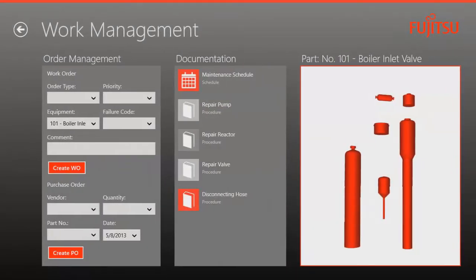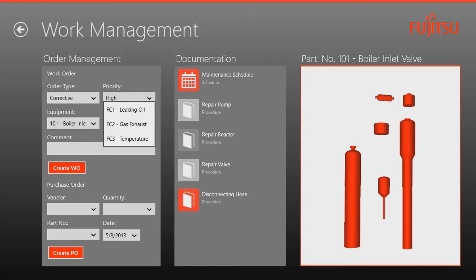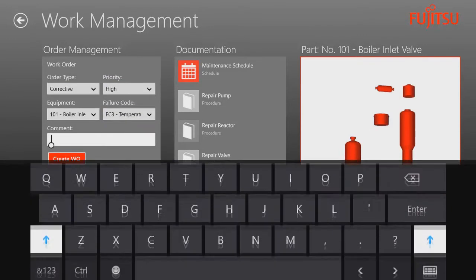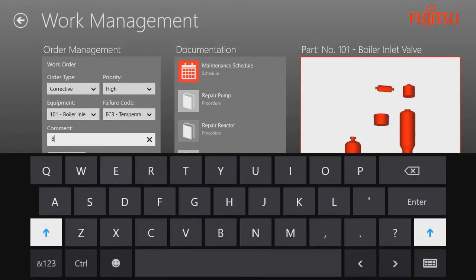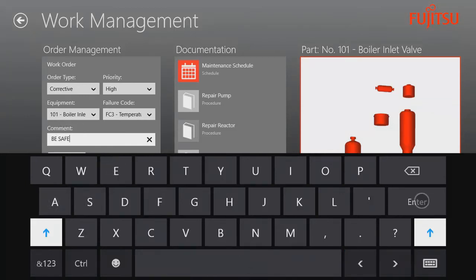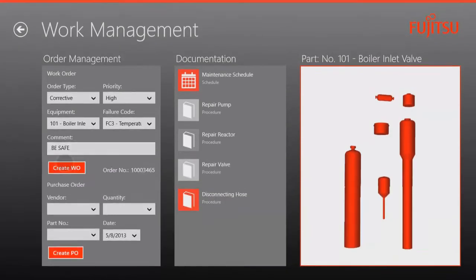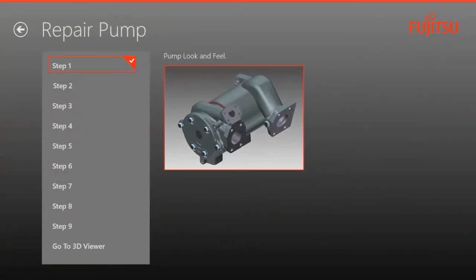They can tap to select a work order type, priority failure code, and even add a comment. They can initiate the purchase order to the vendor and see the required documentation and parts that will be used by the technician during the resolution.